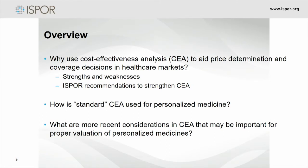So it's probably helpful to dig into it so we can better understand how it can best be used for personalized medicine and pharmacogenomics. I'm going to start with a little background on why we use cost-effectiveness analysis, price determination and coverage decisions, strengths and weaknesses. ISPOR a few years ago realized we needed to address some concerns in the US around CEA and did a special task force report. I'll briefly mention that, and then we'll talk about how standard CEA is used for personalized medicine.